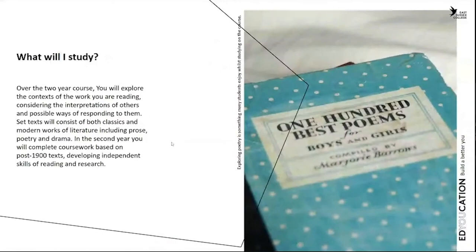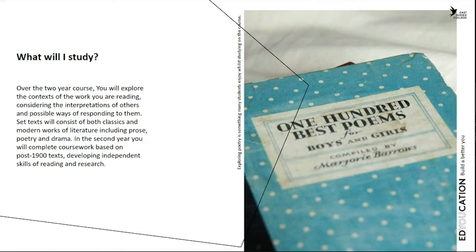Over the two-year course you will explore the contexts of the work you are reading, considering the interpretations of others and possible ways of responding to them. Set texts will consist of both classics and modern works of literature, including prose, poetry and drama. In the second year, you will complete coursework based on post-1900s texts, developing independent skills of reading and research.